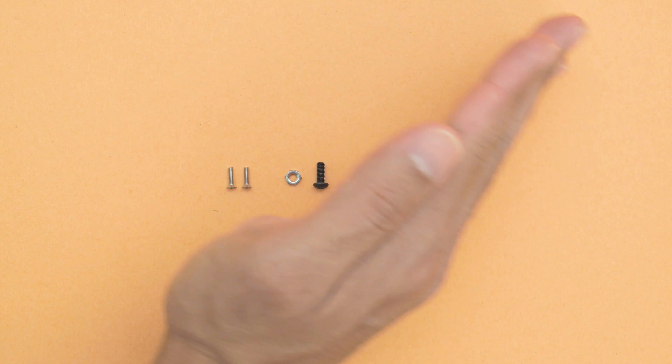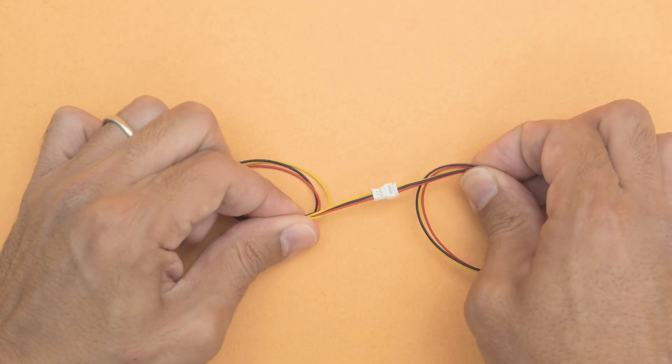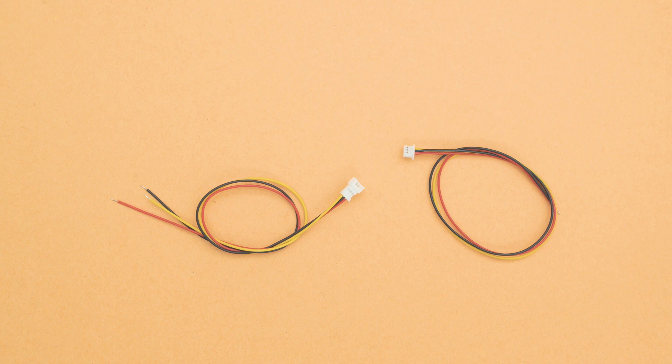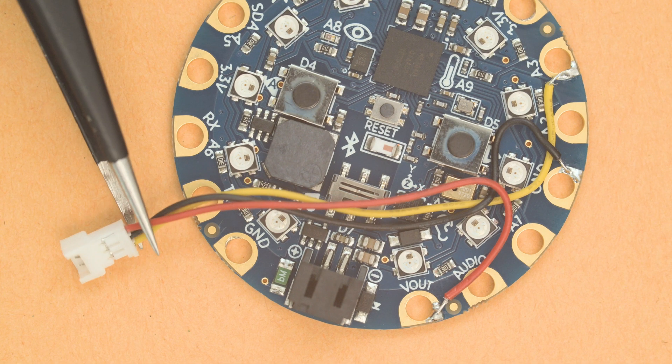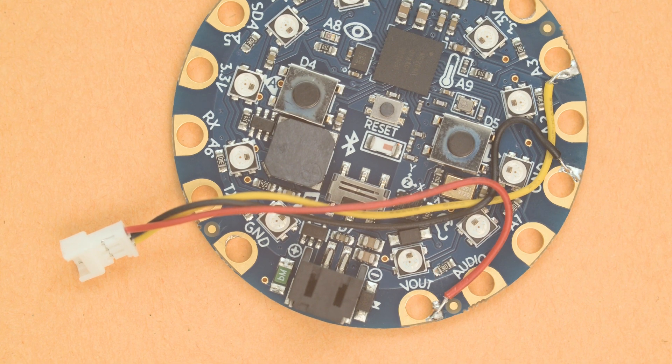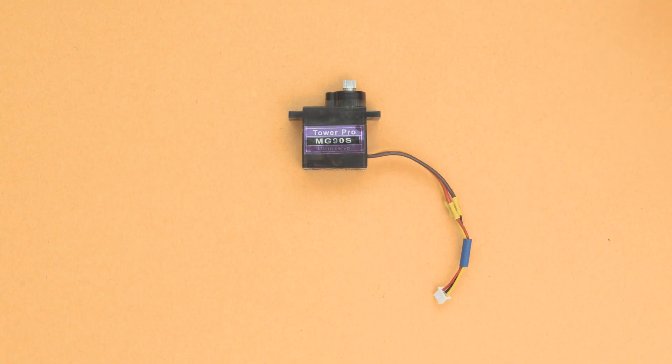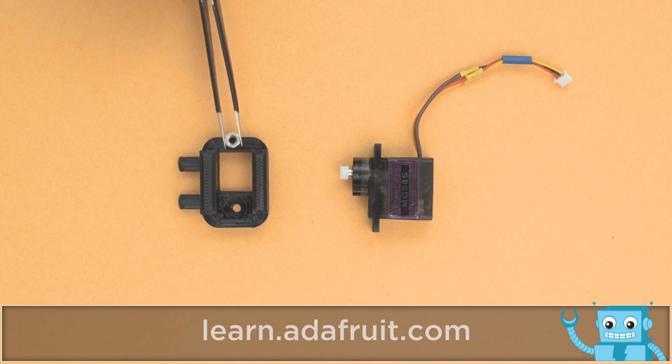For building the servo claw, to make the assembly small and compact, we like using these three-pin pico connectors. One of the cables is wired up to the pads on the Circuit Playground Bluefruit. We shortened the cable on the servo and wired it up to the other cable. Be sure to check out the learn guide for a full tutorial on assembling this project.